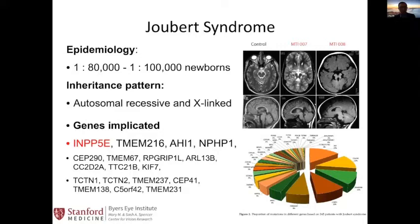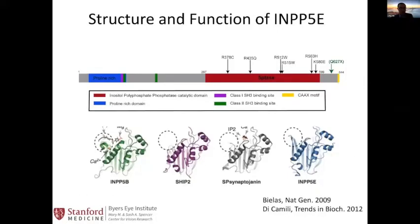The epidemiology is quite rare — about one in 100,000 newborns. It can be autosomal recessive or X-linked. The group summarized eye findings of 250 Joubert syndrome patients. The pie chart identifies known mutations, with a fraction still undescribed. There are 24 additional known genes. Of particular interest is INPP5E, the gene their lab studies.